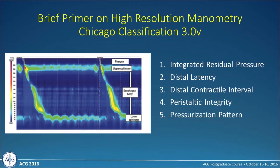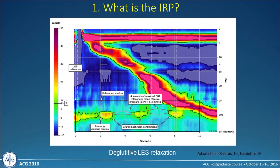There's no way to talk about motility testing without looking deeper into high-resolution manometry. To show you some cases, I want to give a brief primer on what we're looking at. In essence, there are five metrics we look at: the integrated residual pressure, distal latency, the distal contractile integral, the peristaltic integrity, and the pressurization pattern. It's important you understand these metrics when someone is discussing your patients.